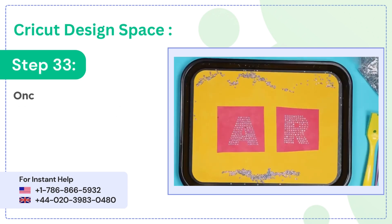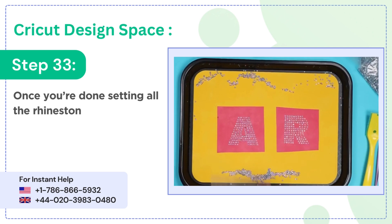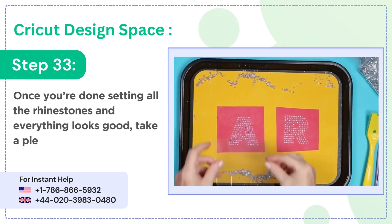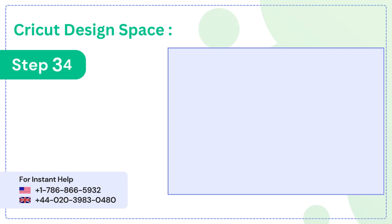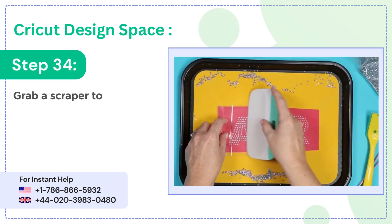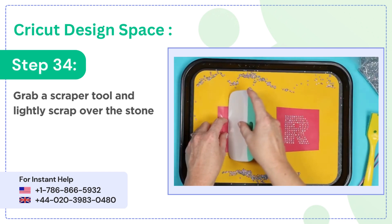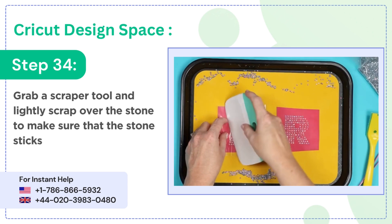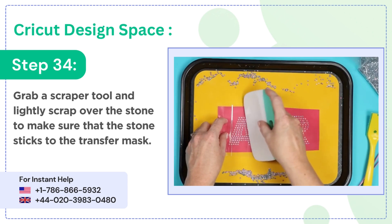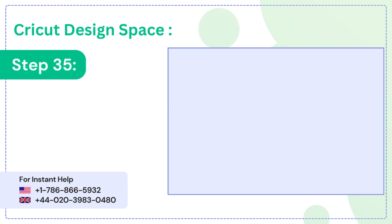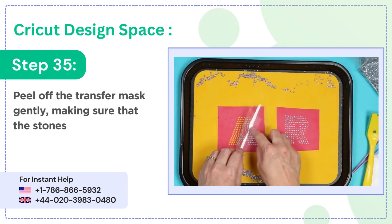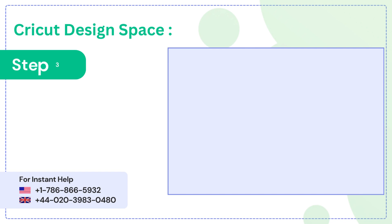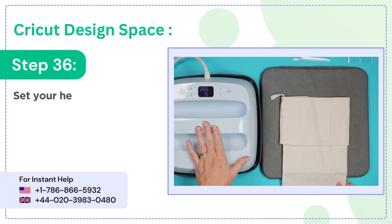Step 33: once you're done setting all the rhinestones and everything looks good, take a piece of heat transfer mask and place it over the design. Step 34: grab a scraper tool and lightly scrape over the stones to make sure that the stones stick to the transfer mask. Step 35: peel off the transfer mask gently, making sure that the stones stay on the mask. Step 36: set your heat press settings, then get the material ready.